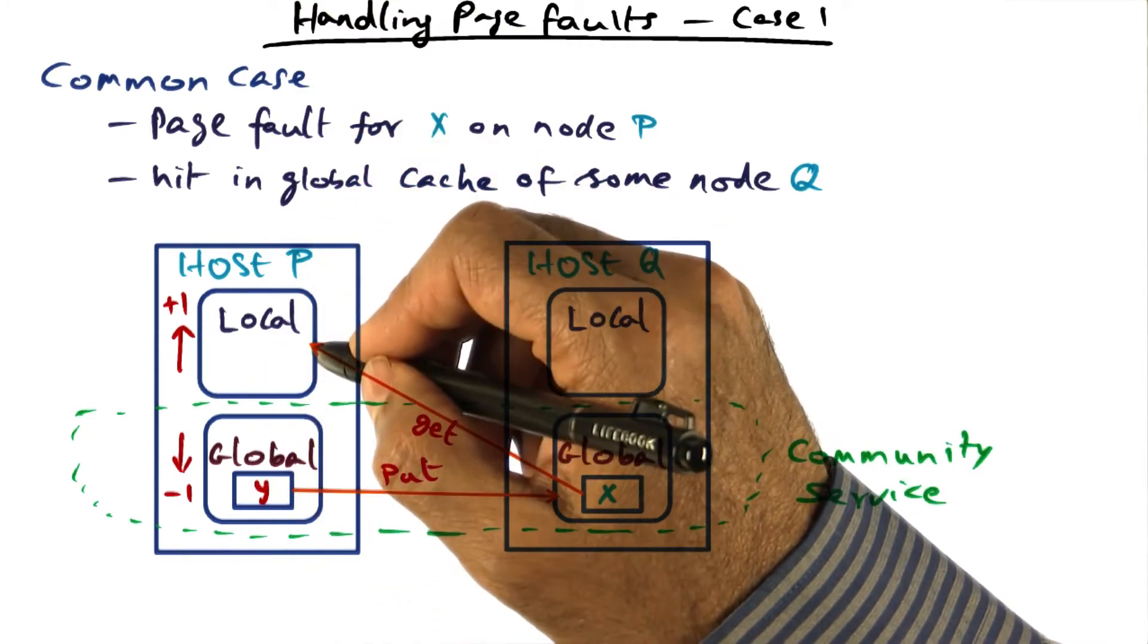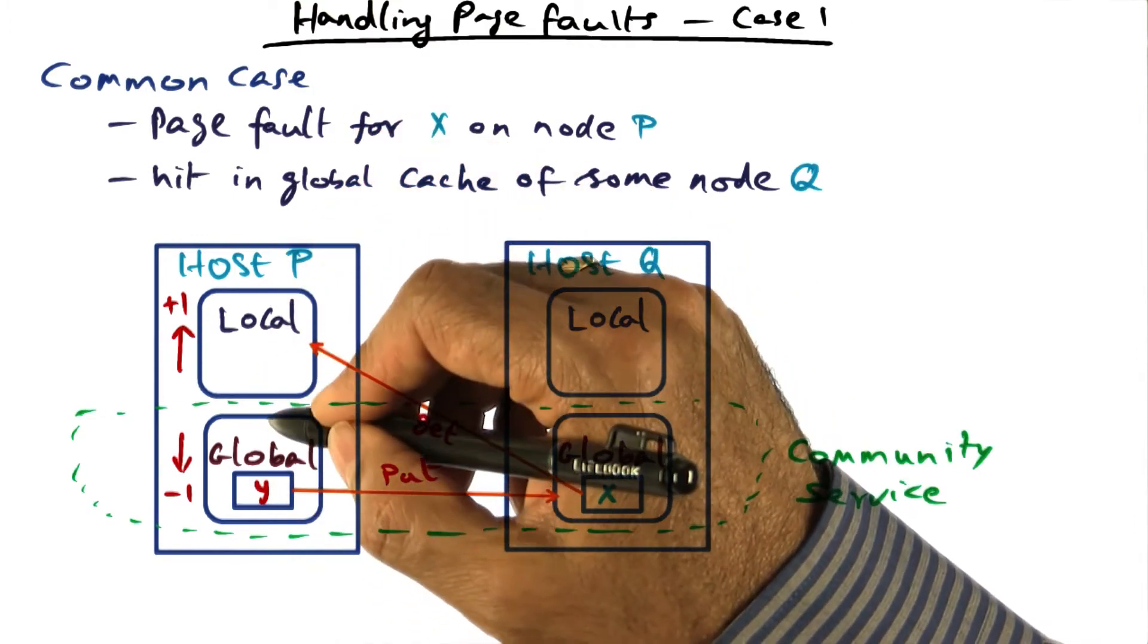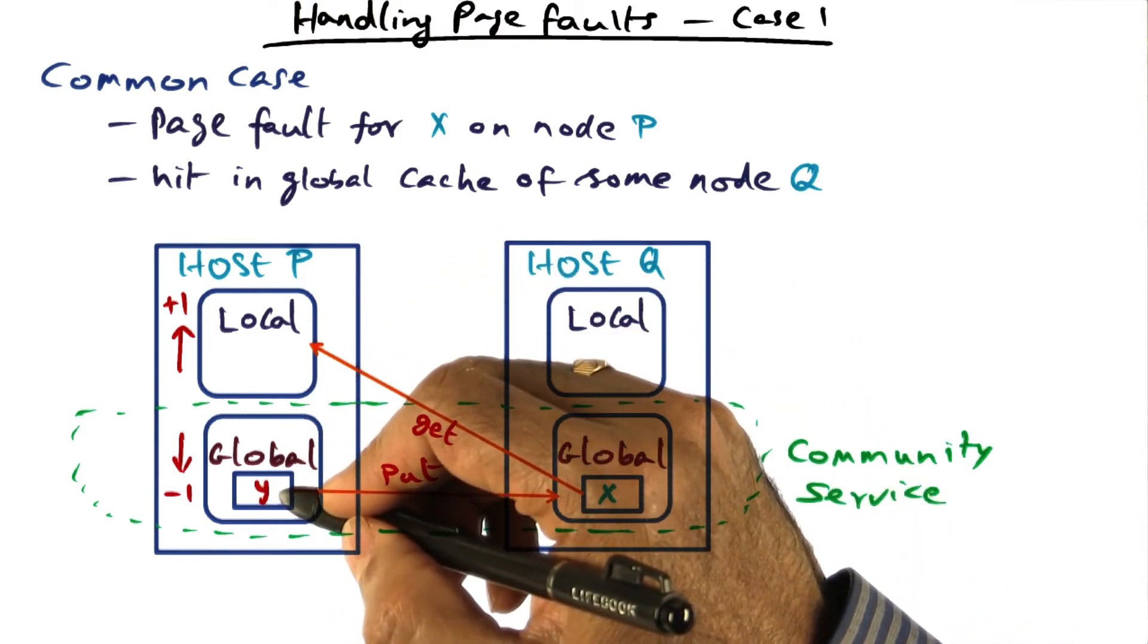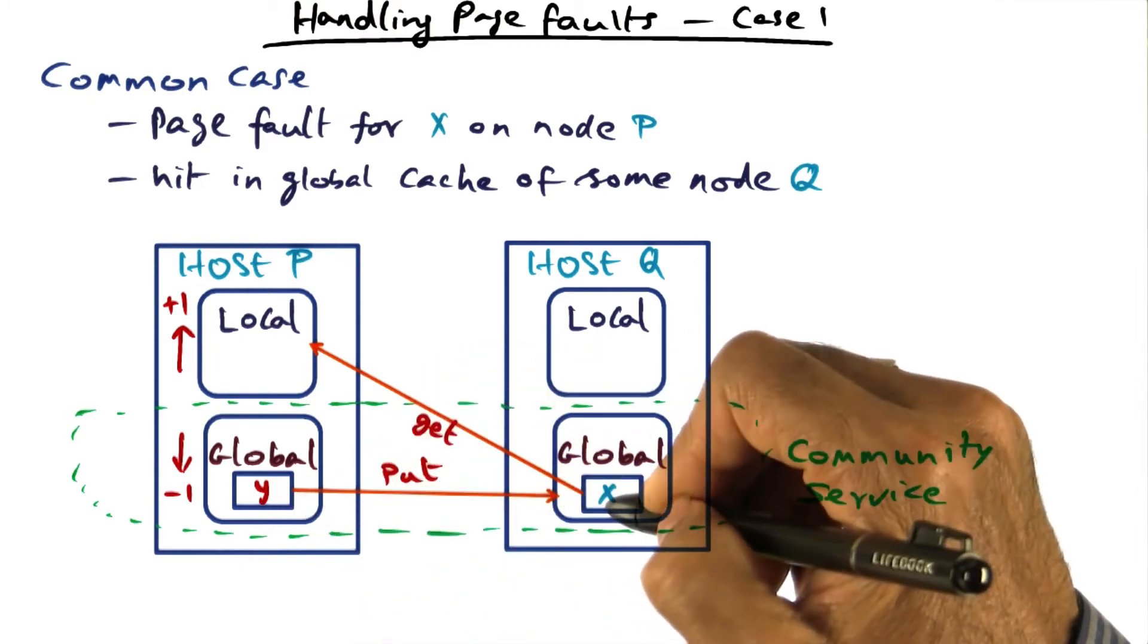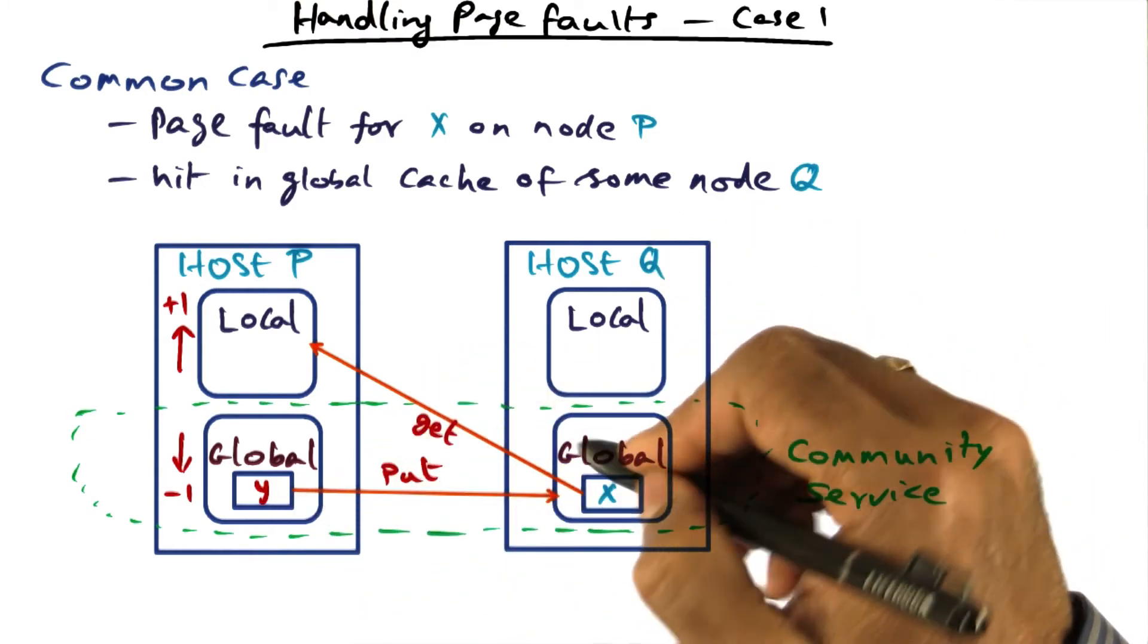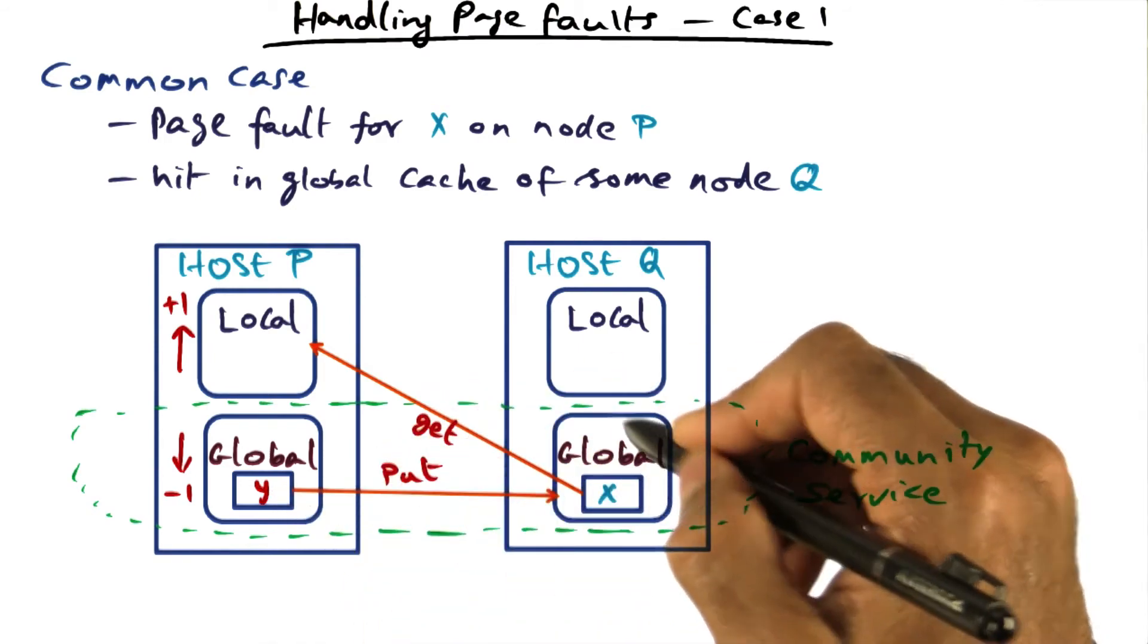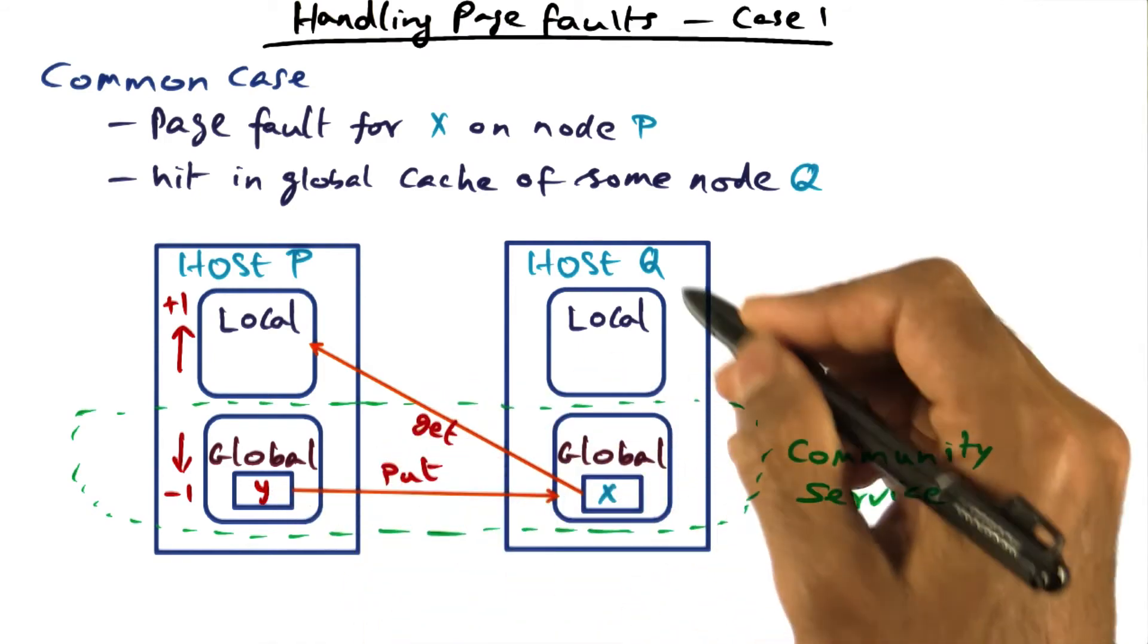And host P says, well, my working set is increasing. Therefore, I have to shrink my community service. I'm going to reduce the global part by one. Pick the oldest page, let's say it's Y. Send it over to host Q so that the host Q can host this new page Y in the global cache on this node.